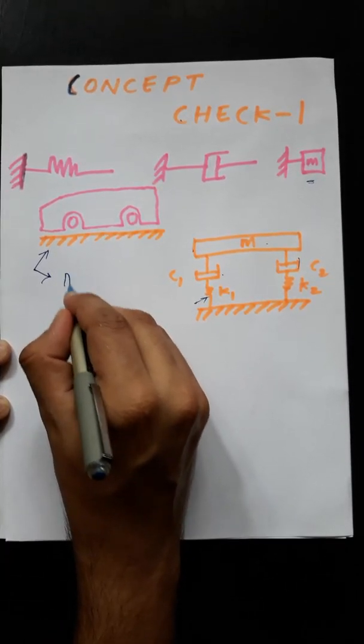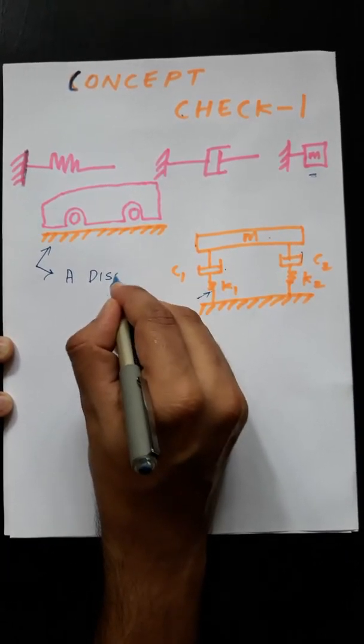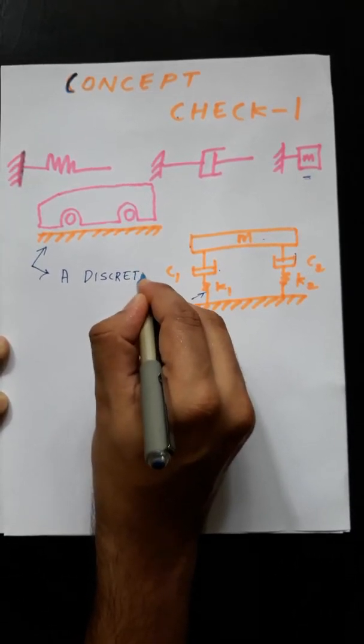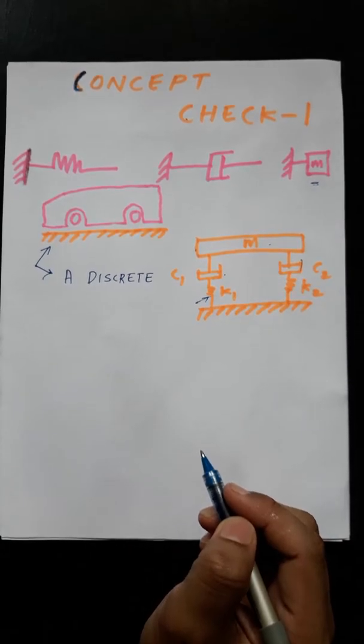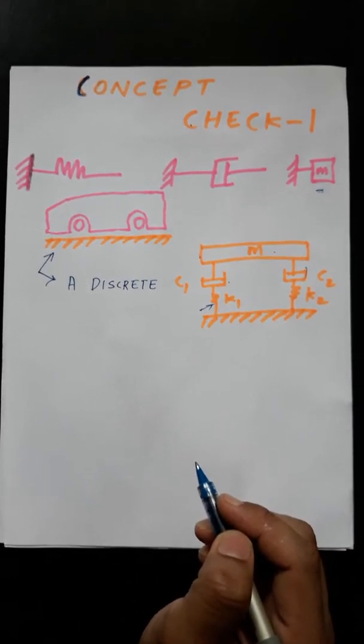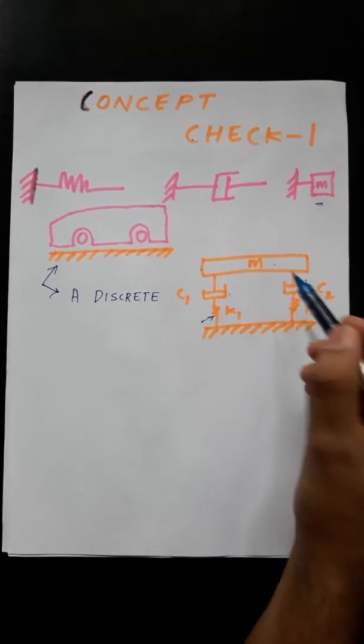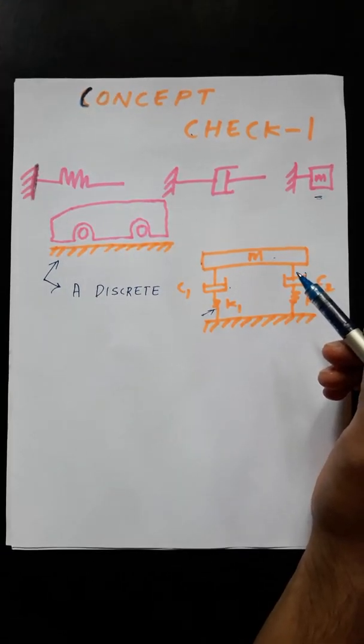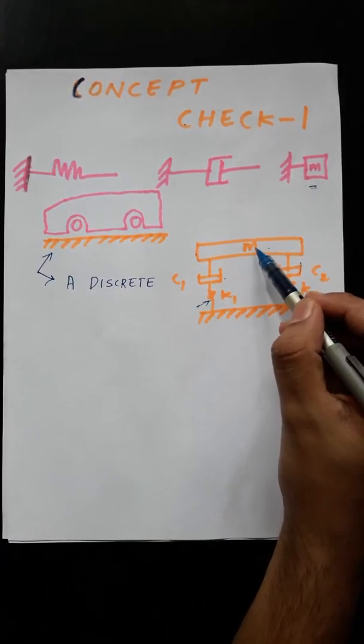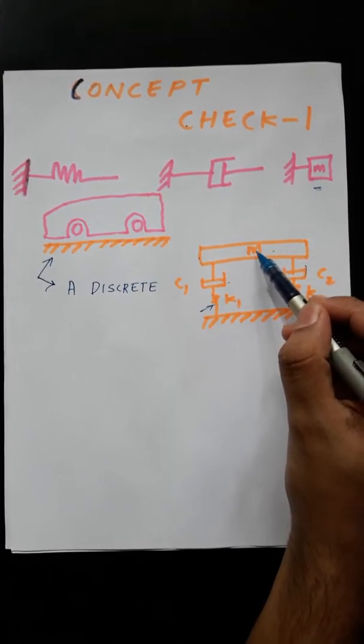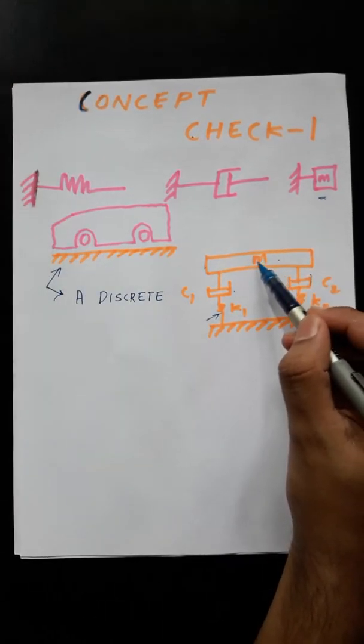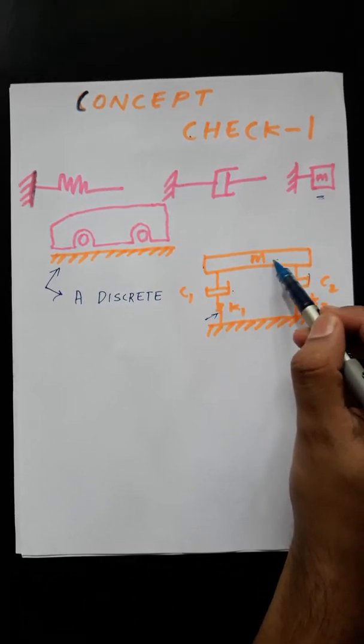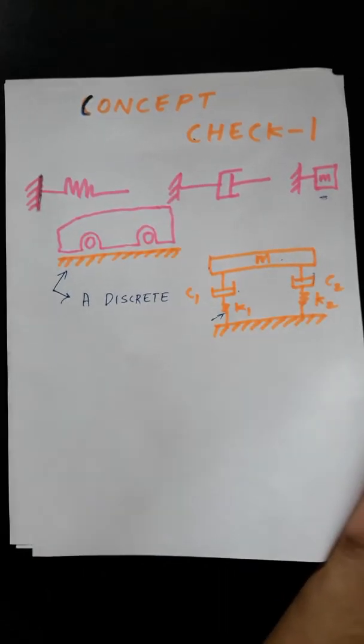So I hear all the time why we are using these springs and dampers and discrete masses like this in modeling all these things. The first answer is this is a physical system and we are creating a discrete model of the same. We are not modeling it as a continuous system. We are modeling it as a discrete system.